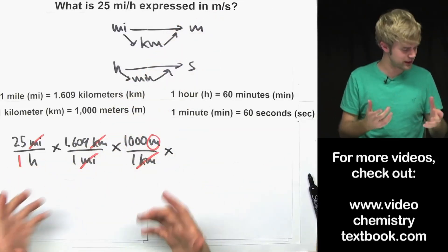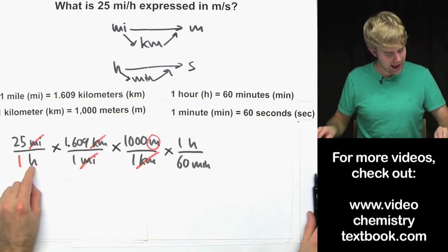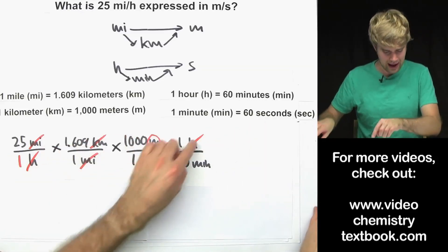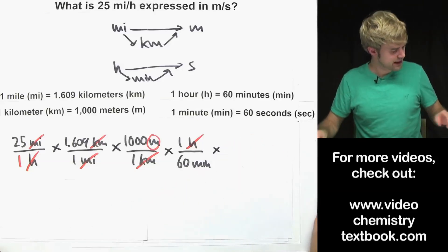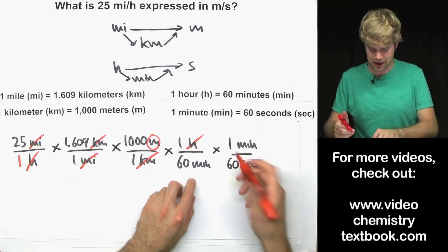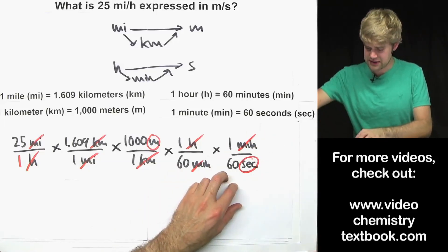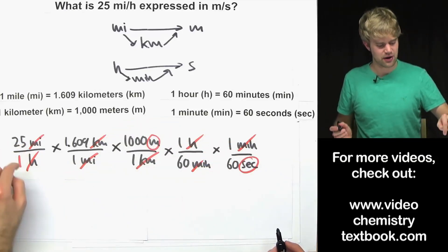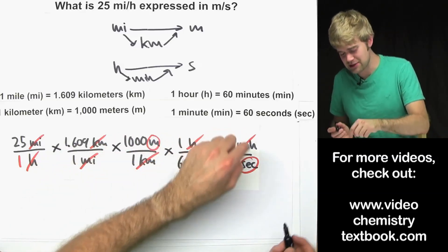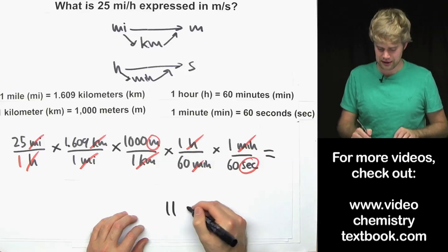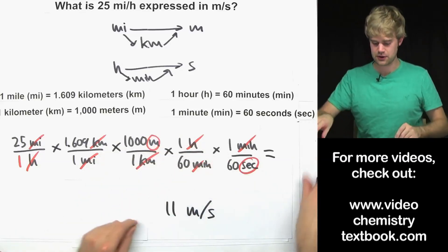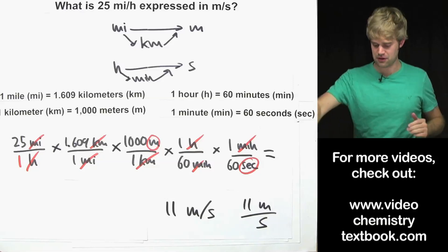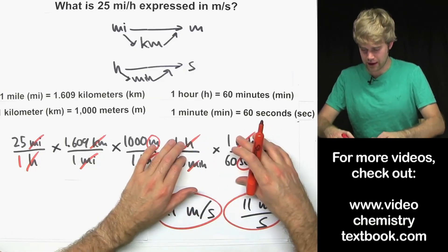We still have hours to deal with. Multiply by a conversion factor with hours on the bottom — no matter how far away, everything multiplied together still cancels. Hours up, hours down — now I have minutes. Then add one more conversion factor: minutes down here, minutes up there, and seconds on the bottom. The two units left are meters over seconds, which is what we wanted. The final answer is 11 meters per second.